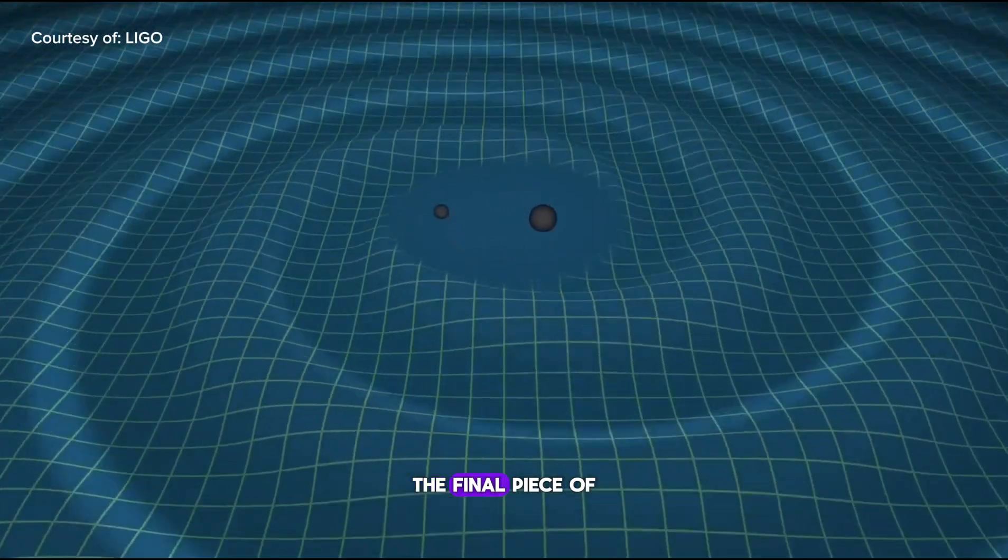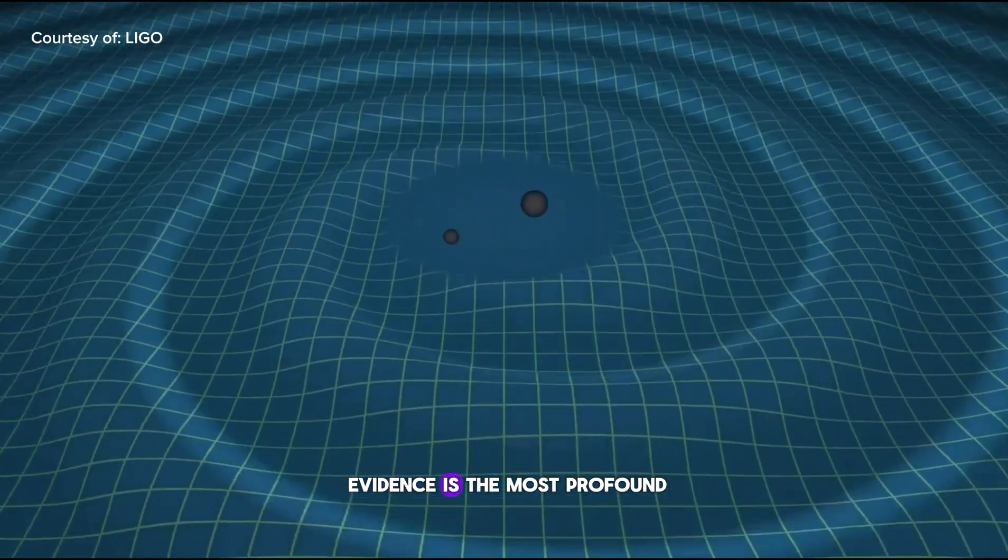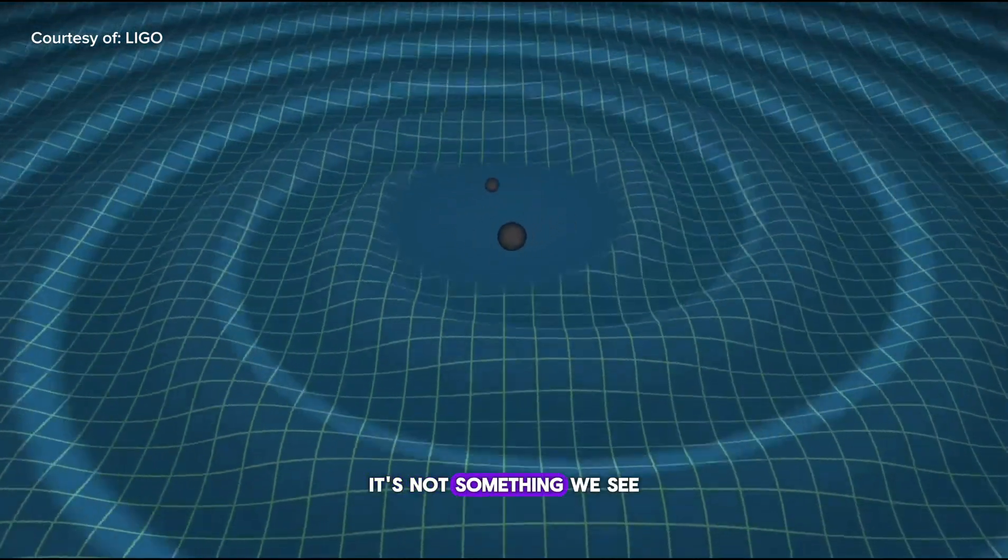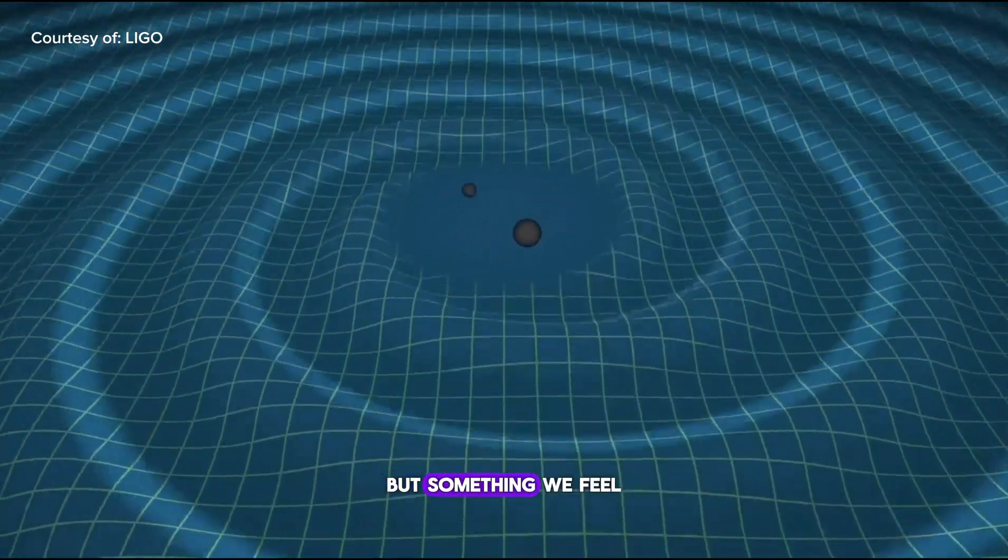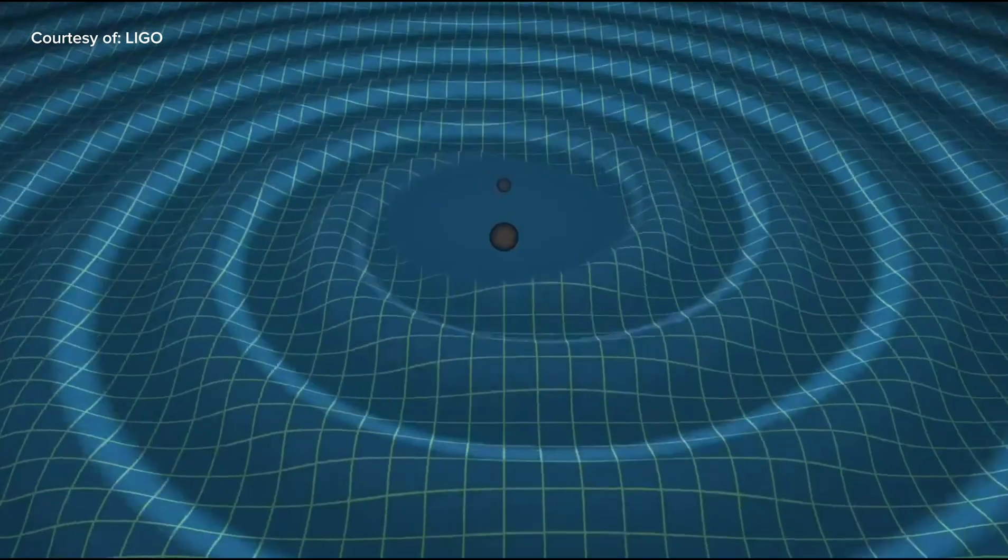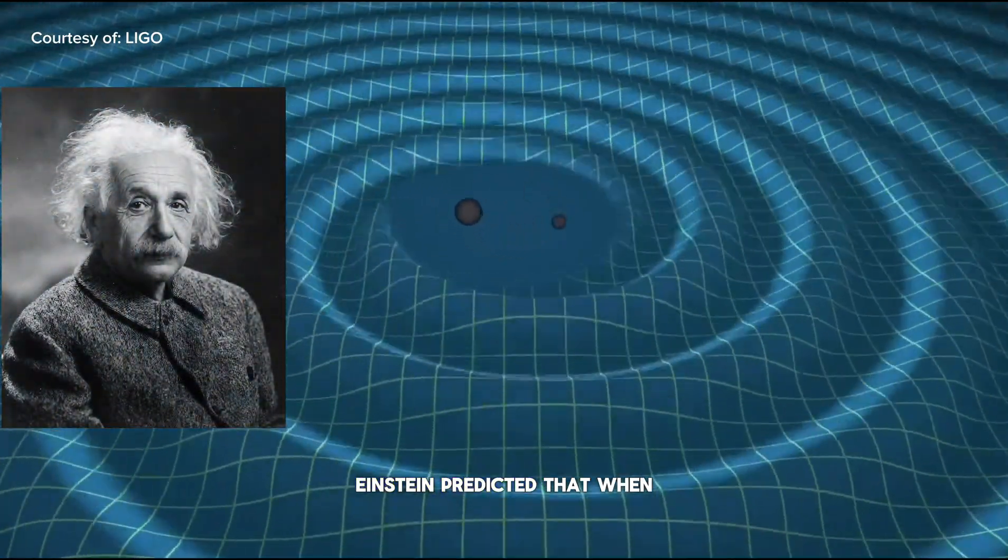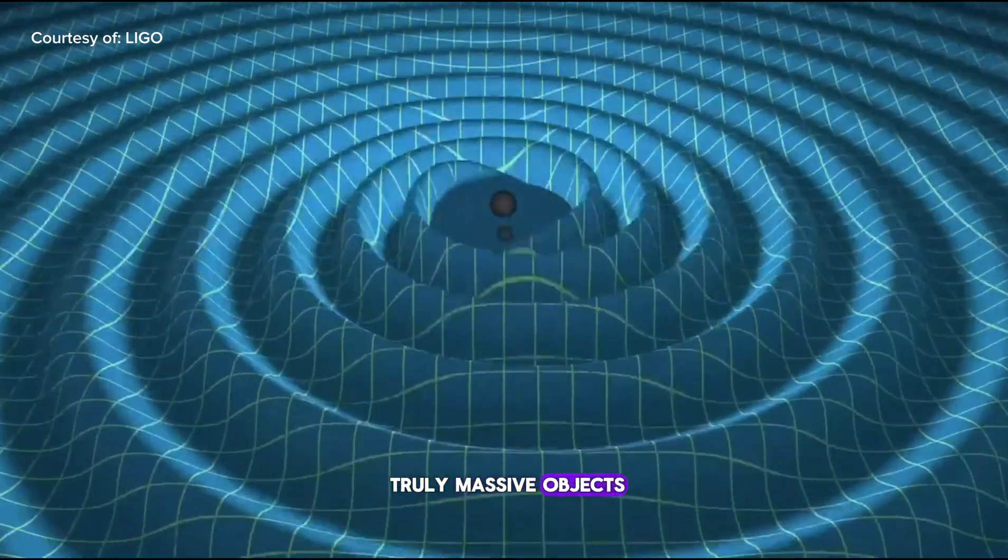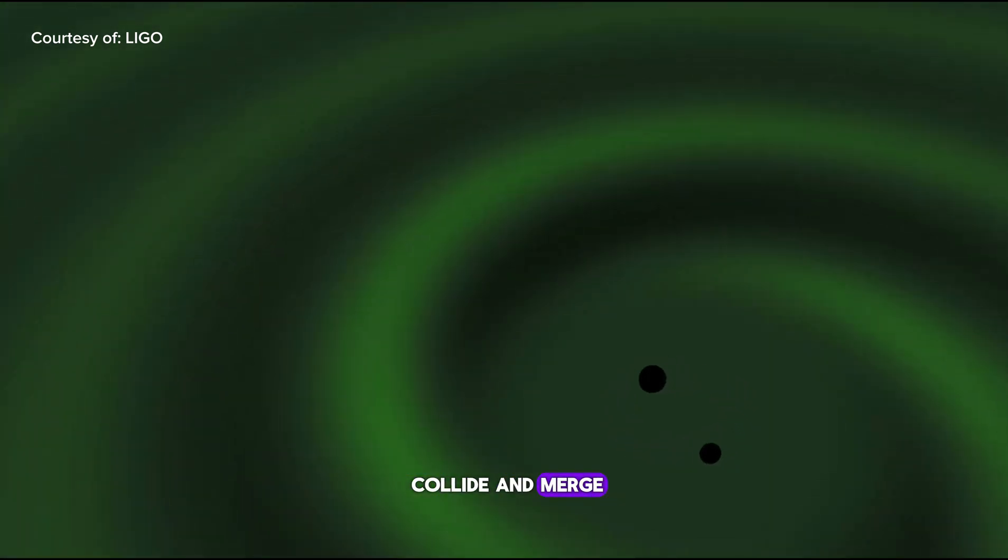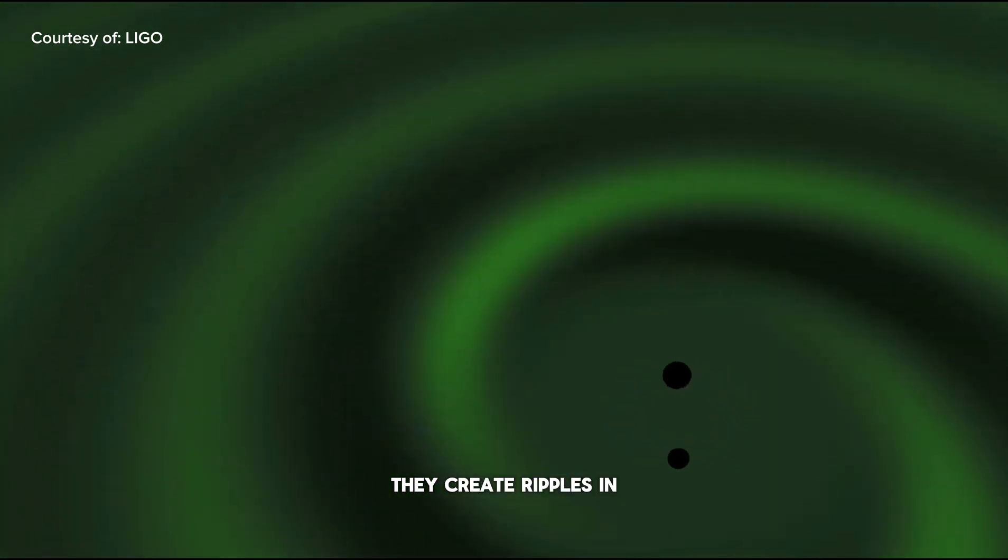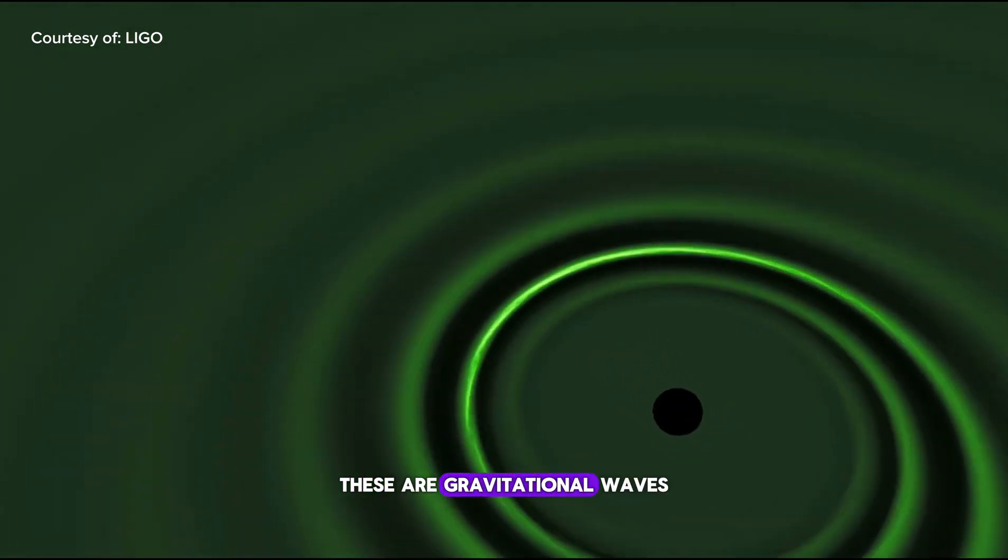The final piece of evidence is the most profound. It's not something we see, but something we feel. Einstein predicted that when truly massive objects, like two black holes, collide and merge, they create ripples in the fabric of space-time itself. These are gravitational waves.